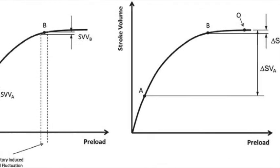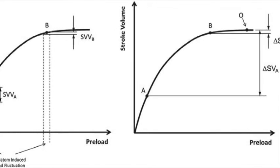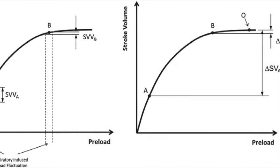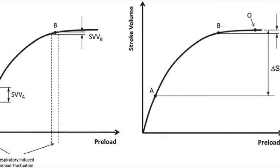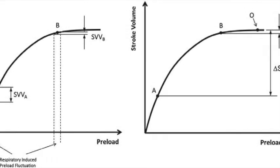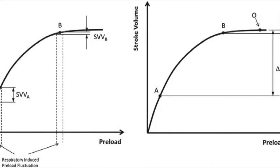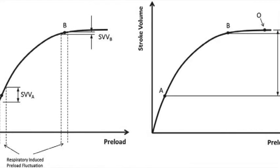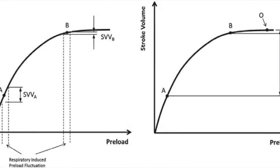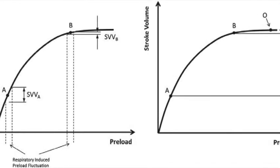Look back at the Starling curve. There is a steep portion, where small changes in cardiac filling give you big changes in cardiac output, and there is a flat portion, where changes in filling have little effect on cardiac output. If the change in preload during the ventilatory cycle produces a big change in blood pressure, then you are directly seeing the heart respond to an increase in volume by increasing blood pressure.